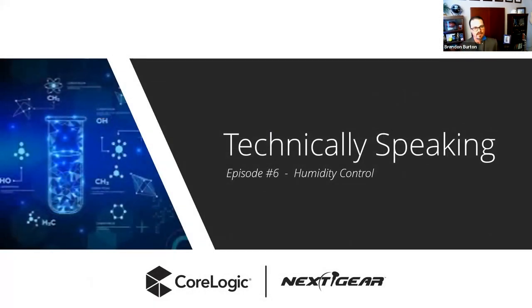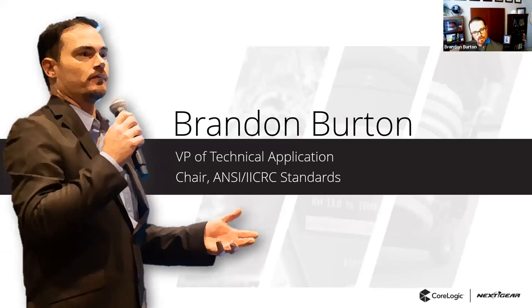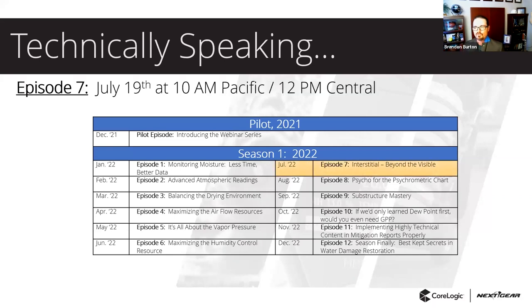That wraps us up on the technical side of today's presentation. This was Technically Speaking, Episode 6 on humidity control. My name is Brandon Burton, your host throughout the series. Up next is Episode 7: Interstitial — Beyond the Visible. We're going to talk about wall cavities, hardwood floors, cabinets, and all the other spaces we typically don't see — their own micro drying environments — how we access, manage, and monitor those spaces most efficiently. That episode is July 19th at 10 a.m. Pacific, 12 p.m. Central. Mark your calendars and we'll see you there.